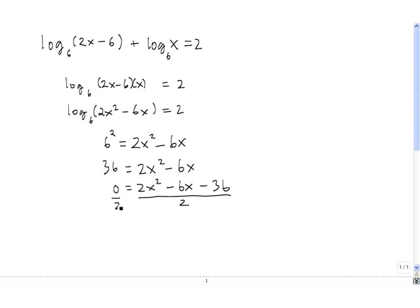So we get 0 from the left-hand side, 2x² divided by 2, the 2's cancel and leave us with x² minus 6x over 2 cancels to minus 3x, and negative 36 over 2 simplifies to negative 18.